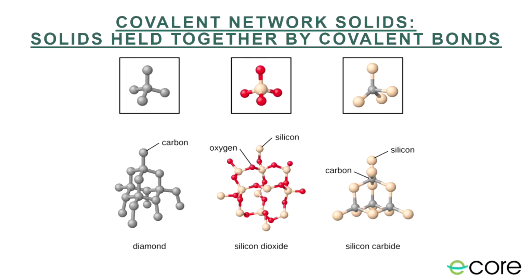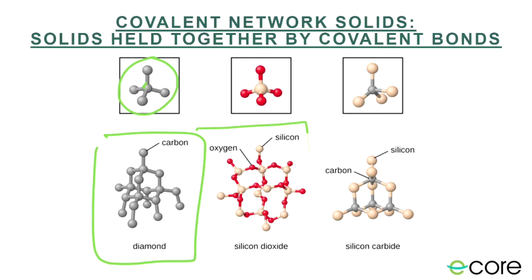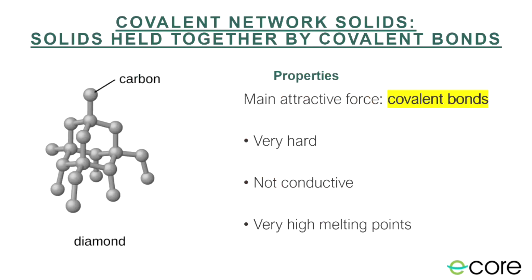The last category is covalent network solids — held together entirely by covalent bonds. Diamond, for example, is just carbon, where four carbons are bonded to each central carbon throughout the whole structure. Silicon dioxide turns out to be sand, and silicon carbide is a very hard material sometimes used in saw blades. These covalent network solids are exceptionally hard like diamond, not conductive because they lack free electrons, and have very high melting points because melting them requires breaking covalent bonds.